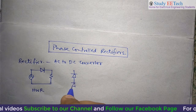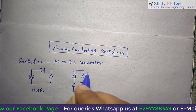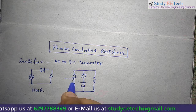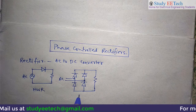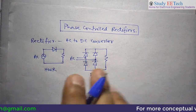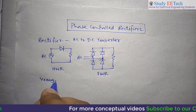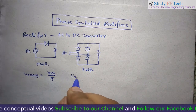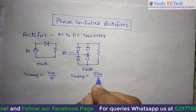And the full-wave rectifier is this one, when the diodes are connected something like that, with the load connected and the alternating voltage supply provided. We call it a full-wave rectifier. In the case of a half-wave rectifier, we get the average output voltage VO average, which is Vm by Pi. And in the case of a full-wave rectifier, the average voltage is equal to 2Vm by Pi.